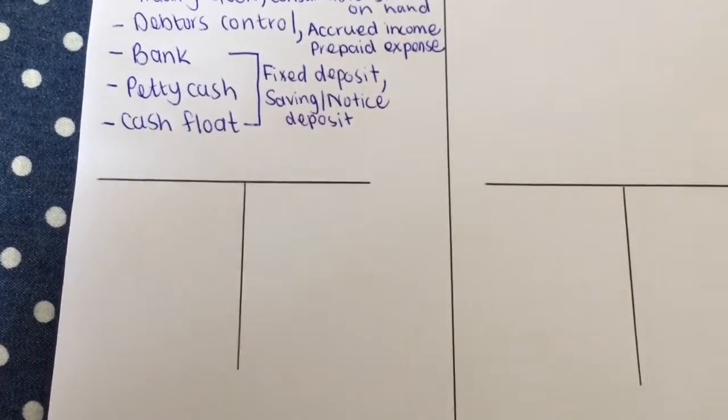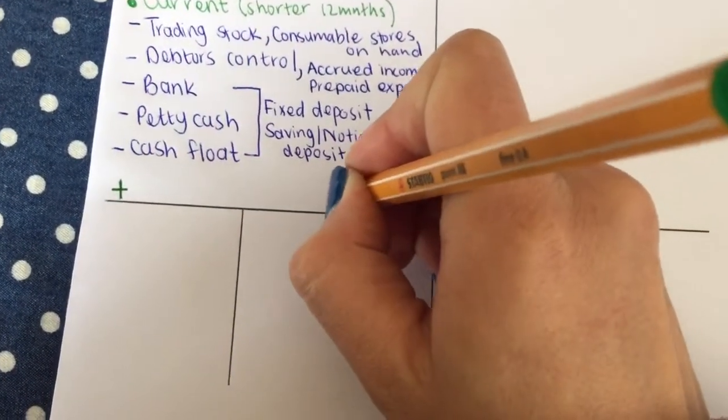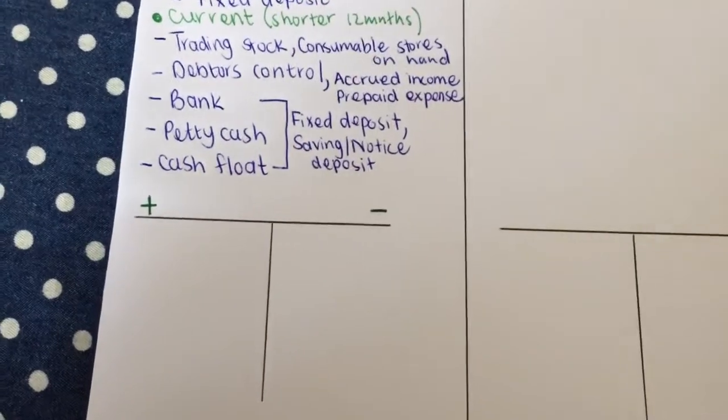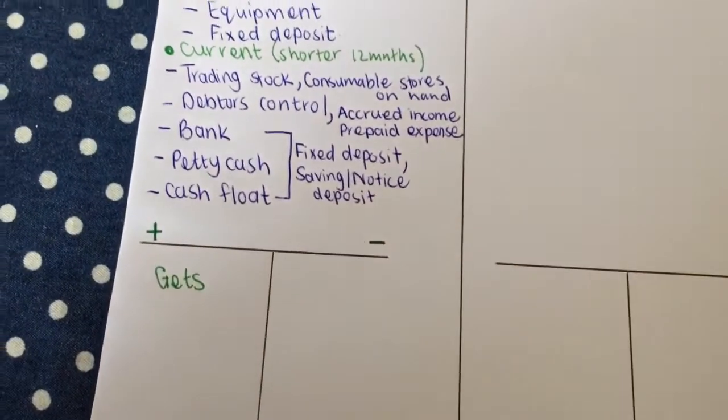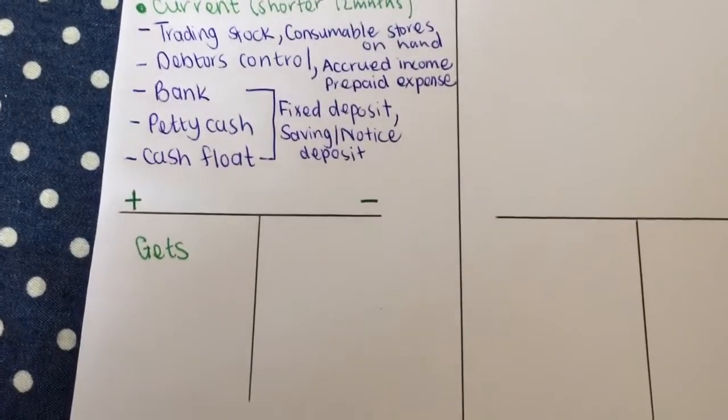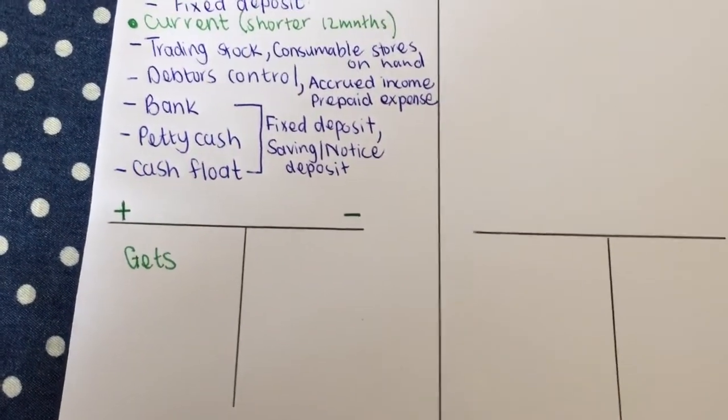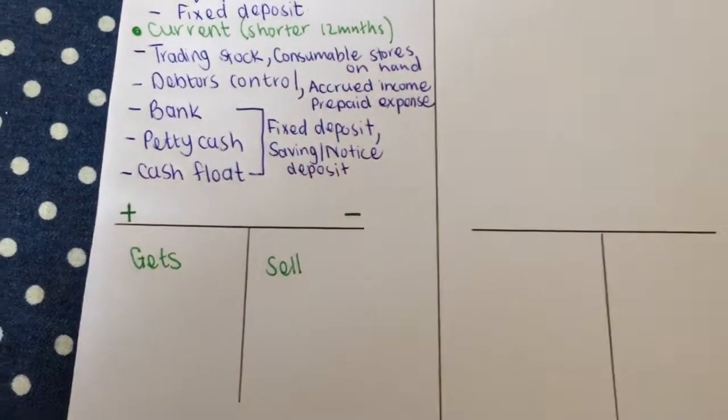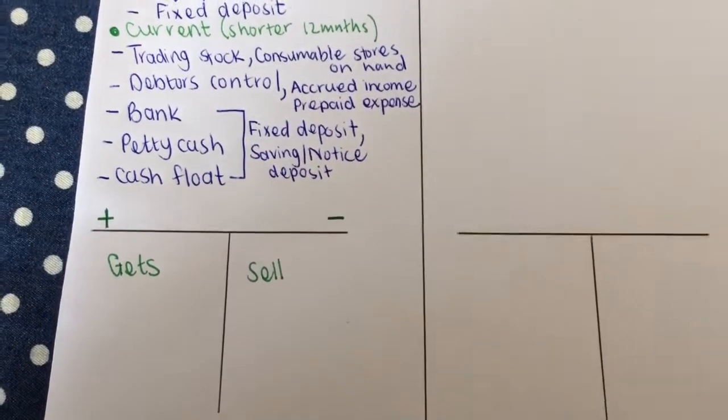Then if we get to my little T account here at the bottom, you need to learn that assets will increase on the debit side and minus on the credit side. Every time the business gets one of those assets, we're going to put it on the debit side, and if they lose it or sell it, it will go on the credit side. With trading stock, we'll see that a lot when we sell it—it will go on the credit side.